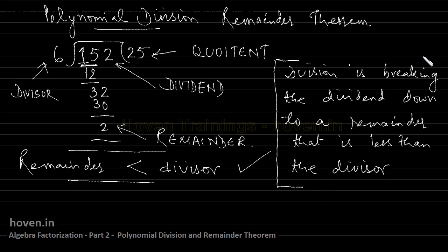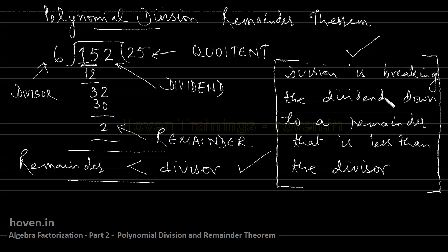It is possible to divide two polynomials also, and the definition of division remains the same. In that case also, we have to break down the dividend to a remainder that is less than the divisor. This is the total objective of division in the case of polynomials as well.